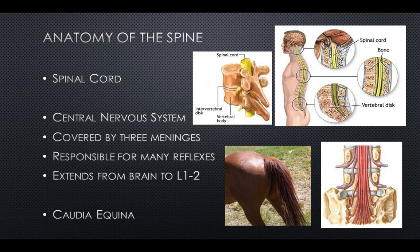The spinal cord is a long, thin, tubular bundle of nervous tissue and support cells, extending from the medulla oblongata in the brainstem to the lumbar region of the vertebral column. The brain and spinal cord together make up the central nervous system, or CNS. The spinal cord begins at the occipital bone and extends down to the space between the first and second lumbar vertebrae. It is around 45 centimeters in men and 43 centimeters in women, with a varying width ranging from 13 millimeters in the cervical and lumbar regions to 6.4 millimeters in the thoracic area.